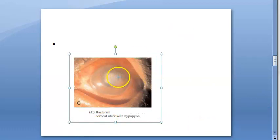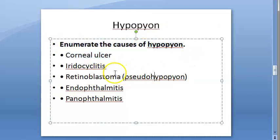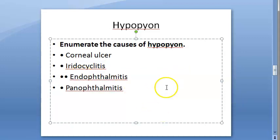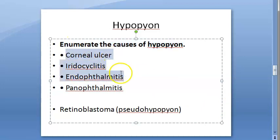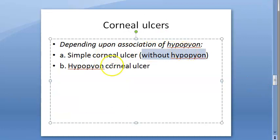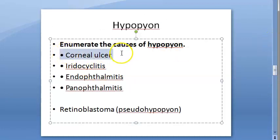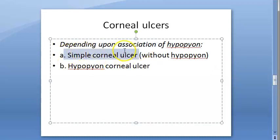This photo shows bacterial corneal ulcer with hypopion — corneal ulcer is there along with hypopion. The causes of hypopion include: corneal ulcer, iridocyclitis, retinoblastoma (which causes pseudo-hypopion), endophthalmitis, and panophthalmitis. Note that corneal ulcers can occur with or without hypopion. If there is a hypopion associated with a corneal ulcer, it becomes a hypopion corneal ulcer.